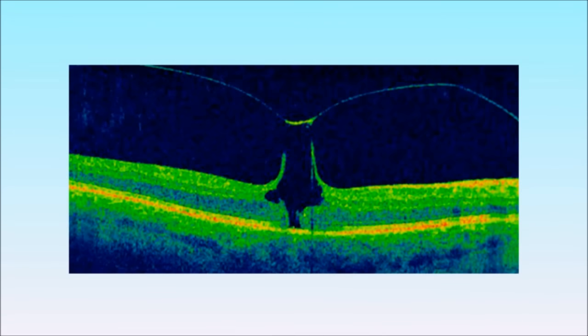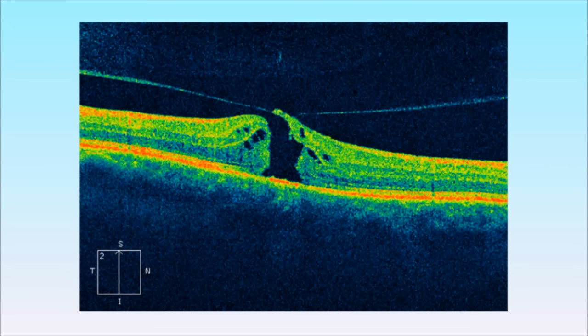In these next two OCT scans the vitreous has moved forward further still taking part of the retina with it. This is called a macular hole and results in very poor vision. It is possible to treat vitromacular traction surgically to prevent macular hole formation.